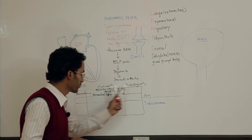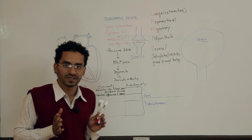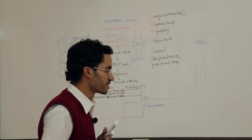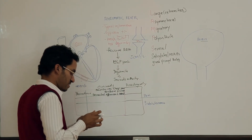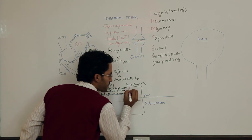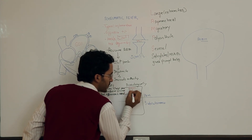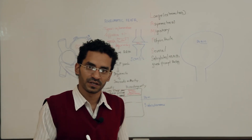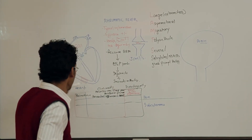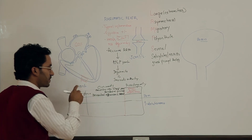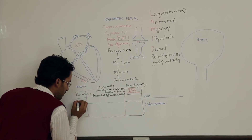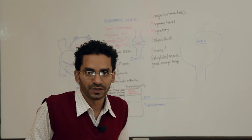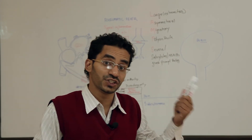The pathological feature in the pericardium is the bread and butter appearance. Now, moving on to the myocardium – there is an inflammatory process going on in the myocardium, and due to this inflammation, there is prolongation of the PR interval.